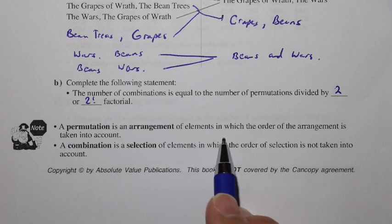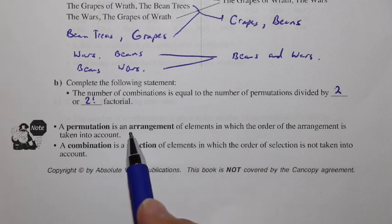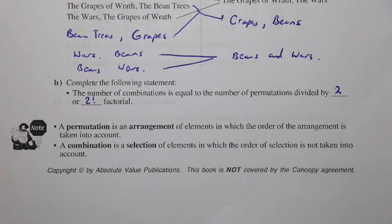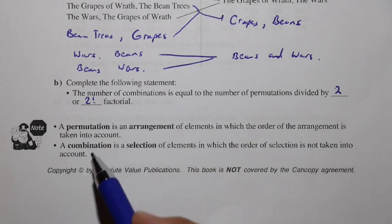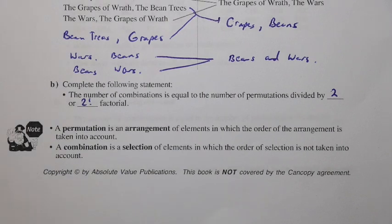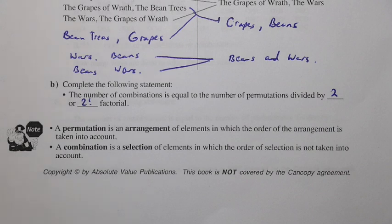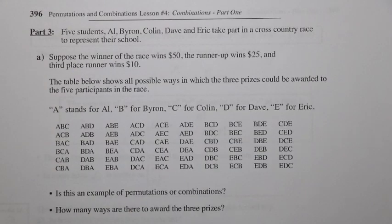A permutation is an arrangement of elements in which the order of the arrangement is taken into account — when we're selecting a set of elements, we also want the arrangement of those elements. With a combination, it's a selection and the order or arrangement of those elements is not important, so it's not taken into account. You can say a combination is a lot less fussy than a permutation. Think of it like milk and cereal — it doesn't matter whether the cereal goes in first or the milk goes in first. Whereas a permutation would be like taking a shower and getting dressed — there's a certain order required.